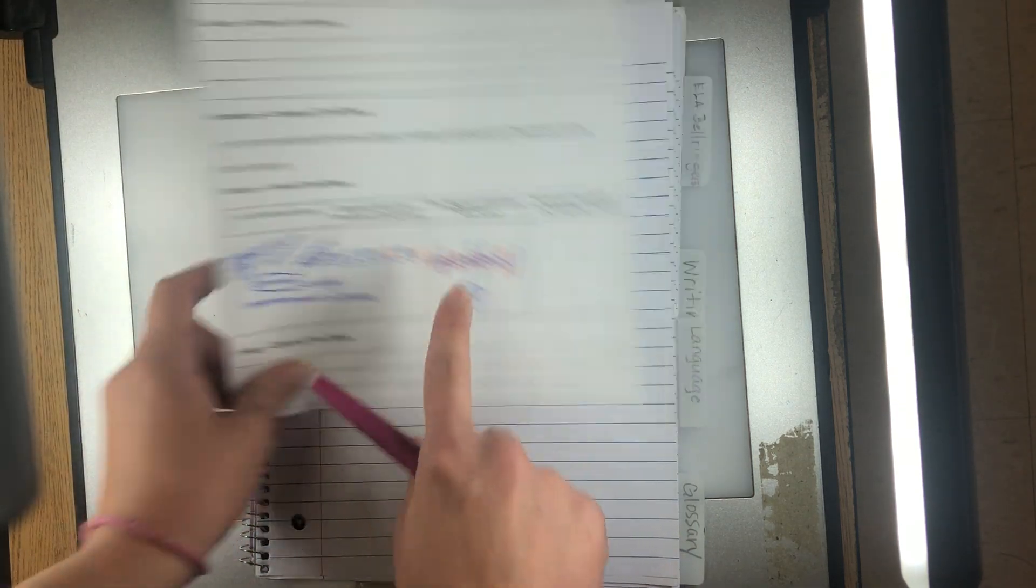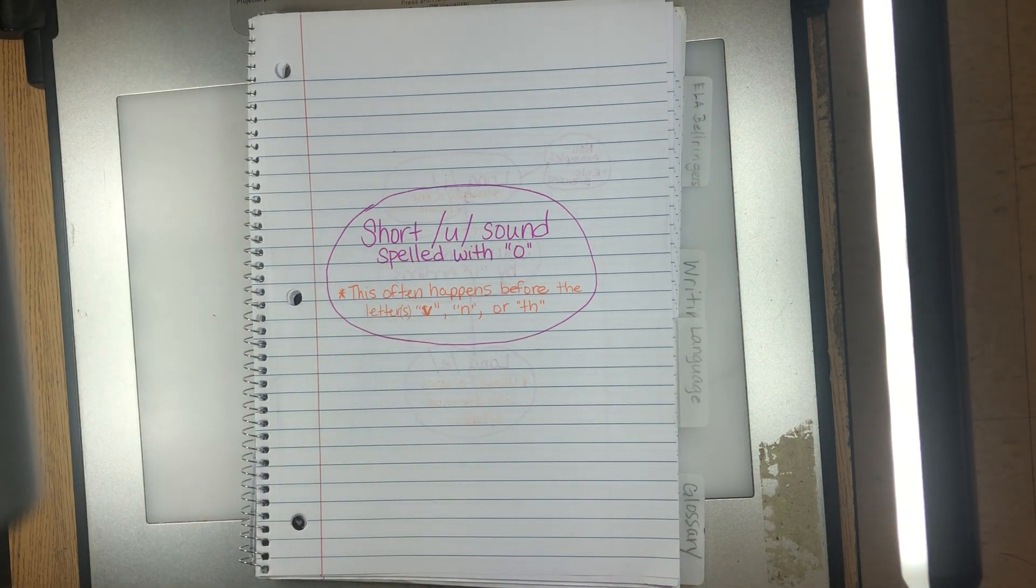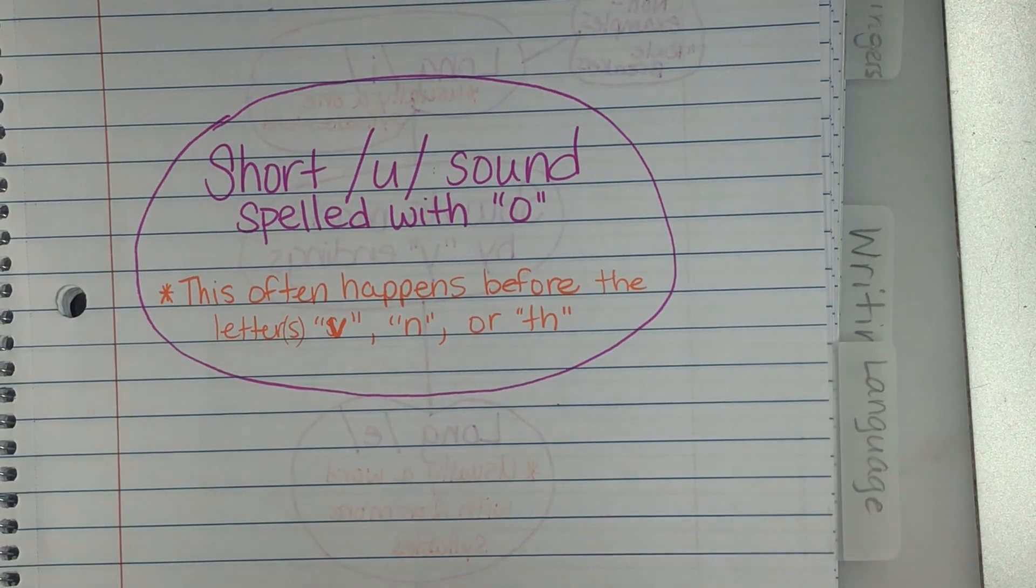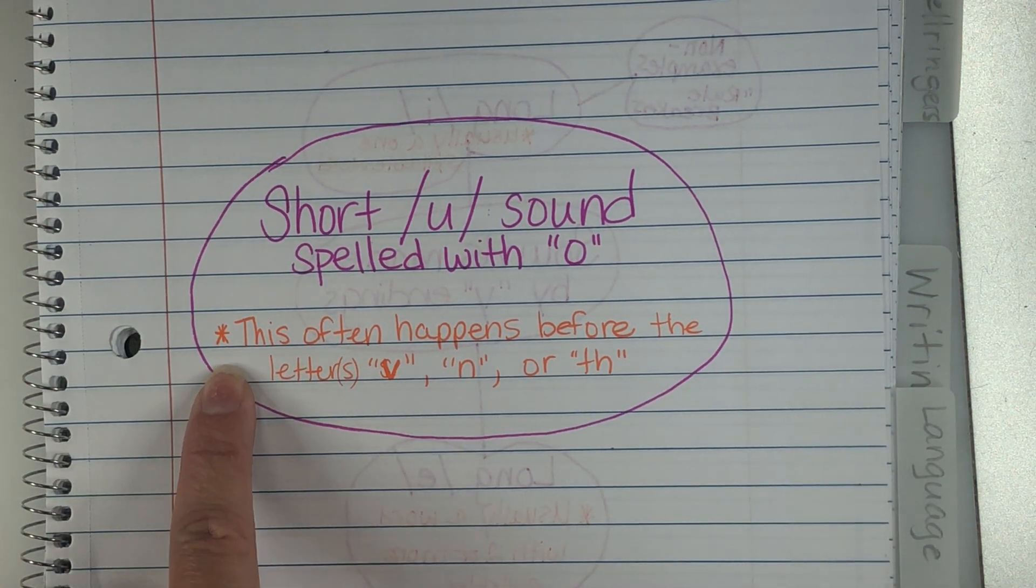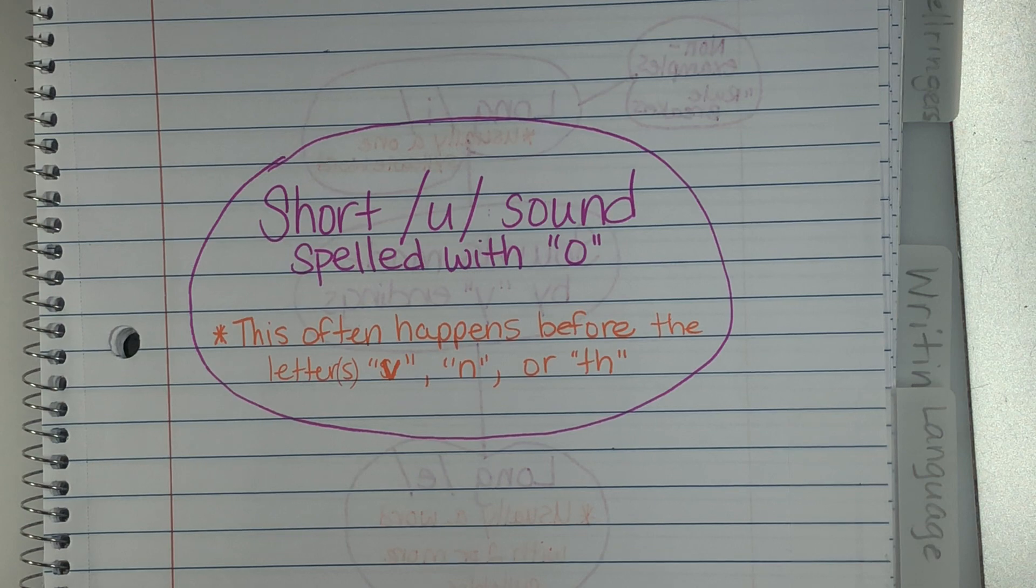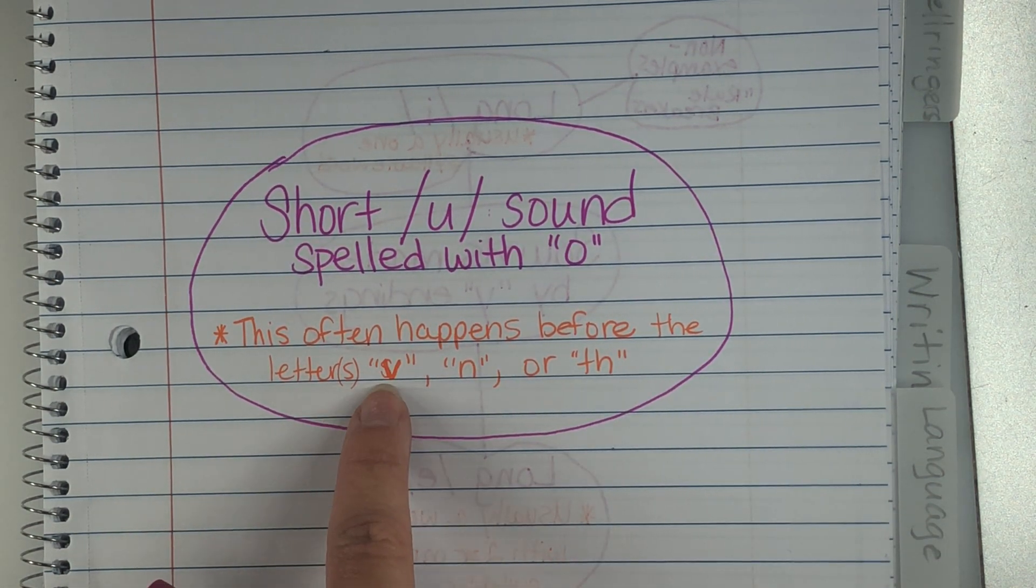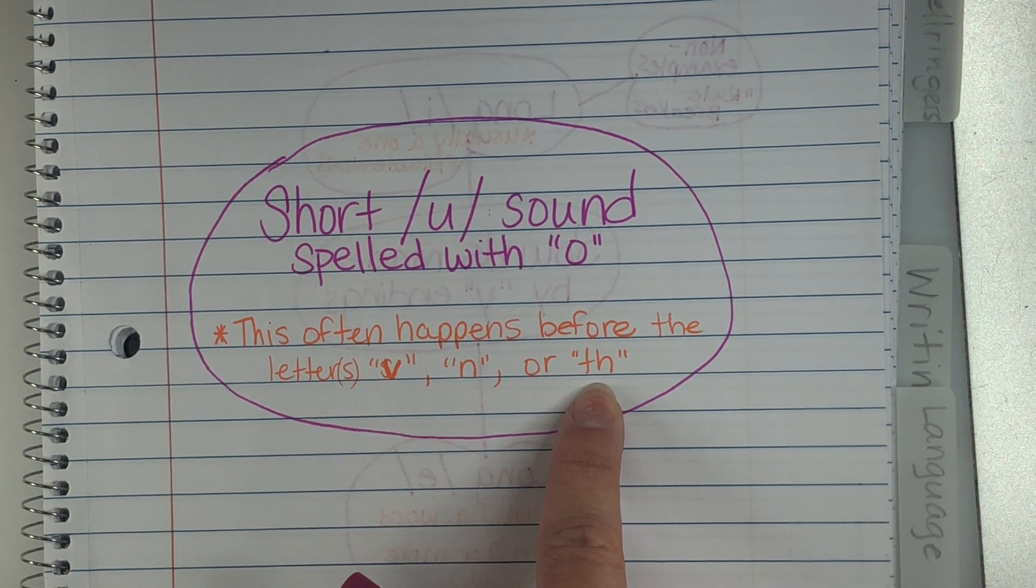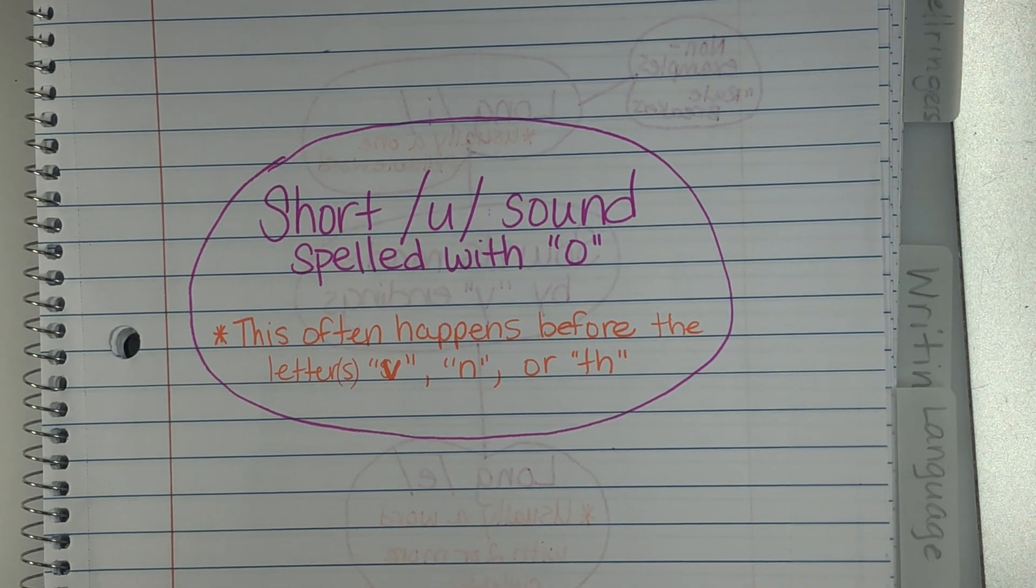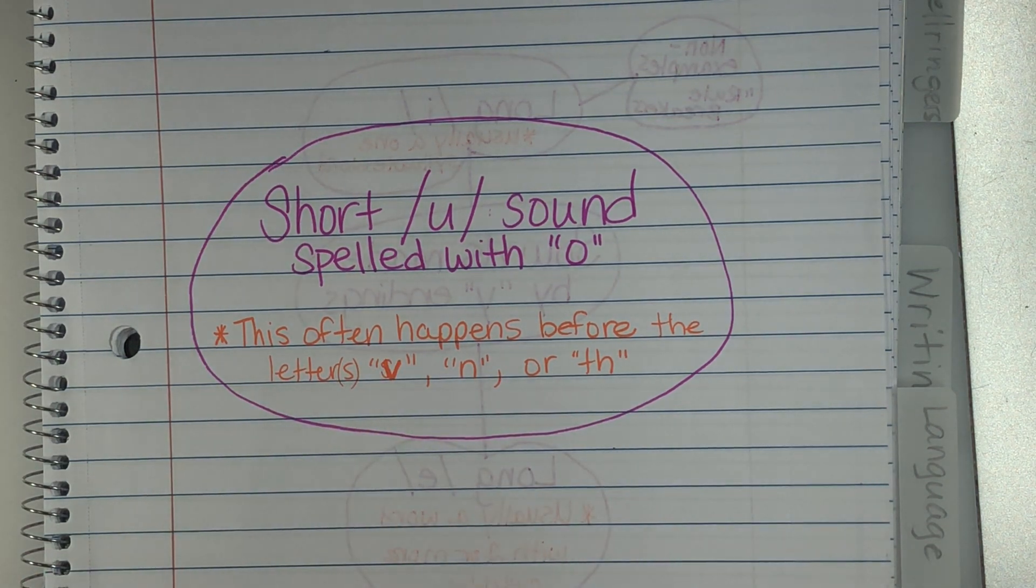So the first one that I want to talk about is this O is going to give us a short U sound. Now when I give you a rule about language, it's not always - it can be broken sometimes. But typically, a short U sound will be spelled with the letter O if it comes before the letter V, the letter N, or the letters TH. There can be other letters where you hear a short U sound, but most often it will be in this case.